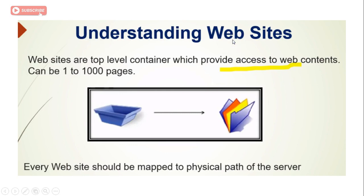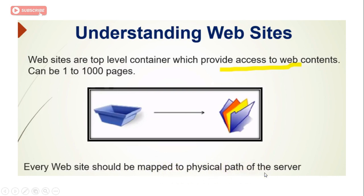First, let's understand what a website is. A website is a top-level container — you can consider it as a container where certain contents are kept. Whatever we access is called content, whether it's Google, Facebook, YouTube, an email, or a song. A website can contain hundreds or thousands of pages of information inside that container.